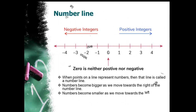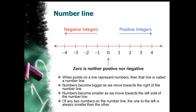I have a number line which has 0 in the middle, which is neither positive nor negative. On the right side there are positive numbers; on the left there are negative numbers. Same numbers, but only the difference is the sign. When points on a line represent numbers, this line is called a number line. The number becomes bigger as we move towards the right, and smaller as we move towards the left. Always keep in mind: positive numbers are greater than negative numbers.